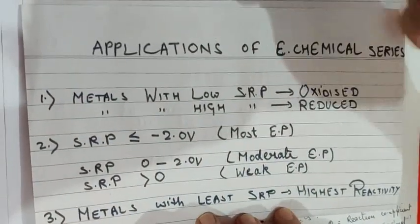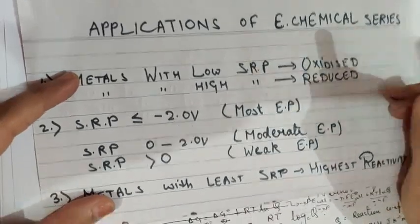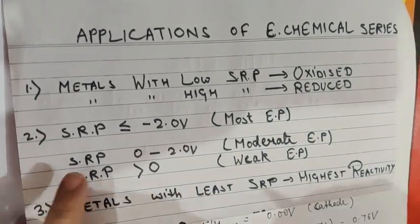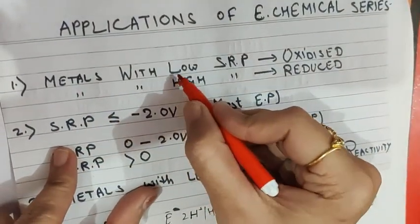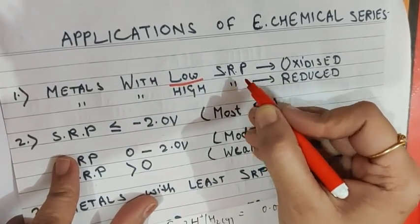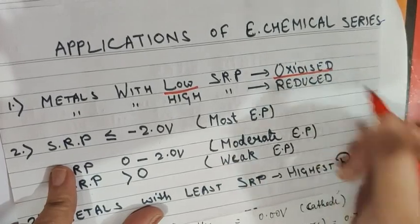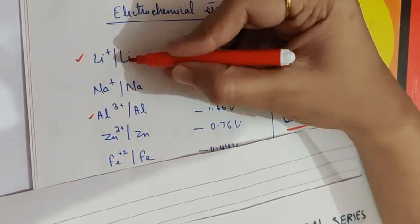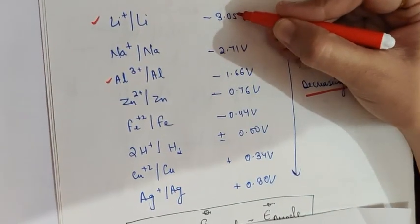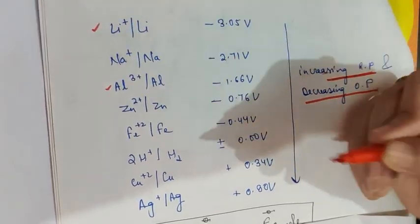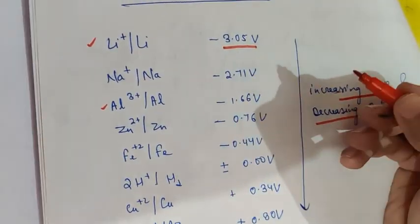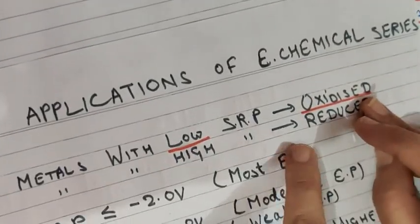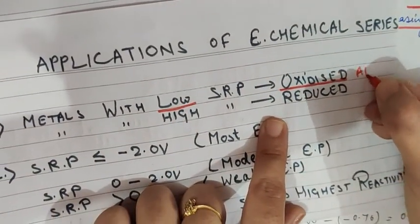Now let us look at some more applications of the electrochemical series. First: metals with low standard reduction potential get oxidized. From the series, the lowest reduction potential is that of lithium, with a value of minus 3.05 volts. So lithium has the lowest reduction potential, meaning it will get oxidized, and therefore it will form the anode.